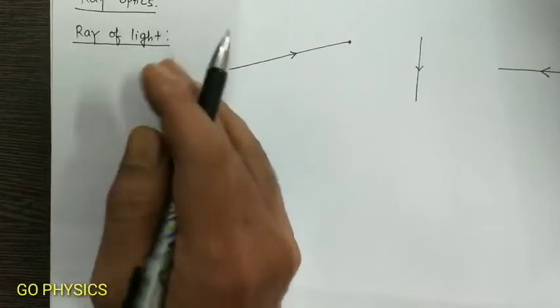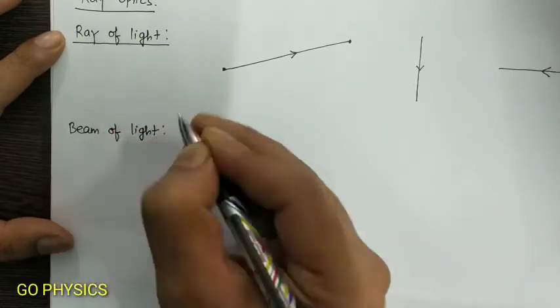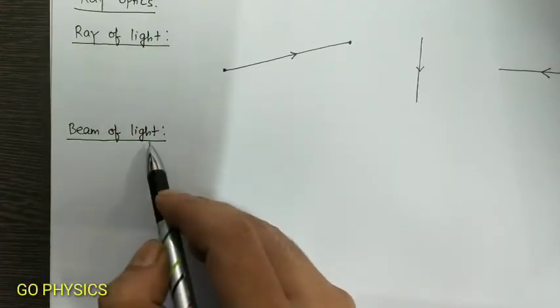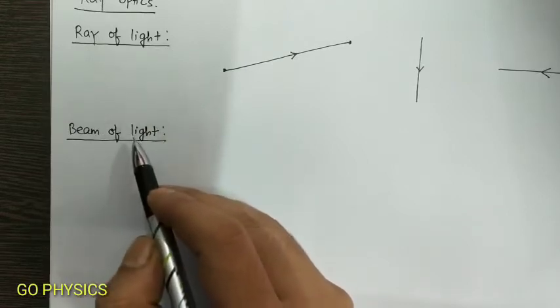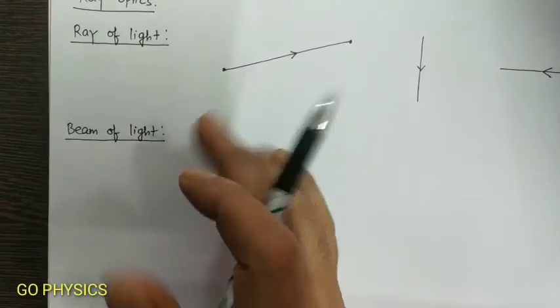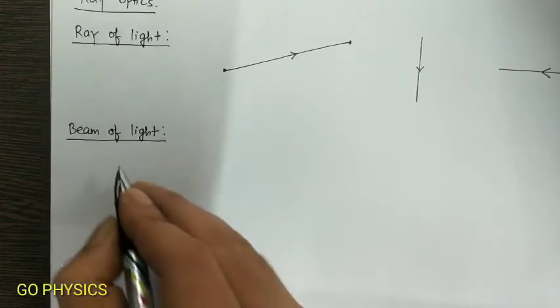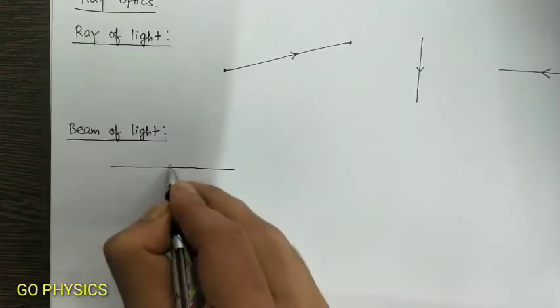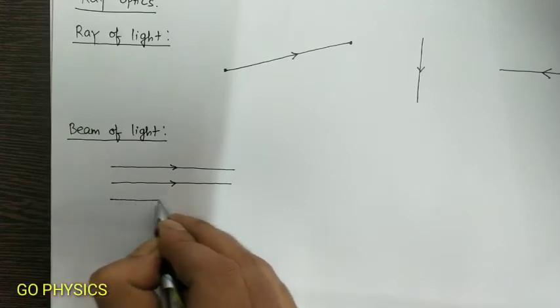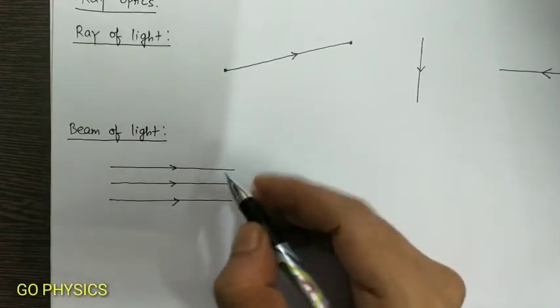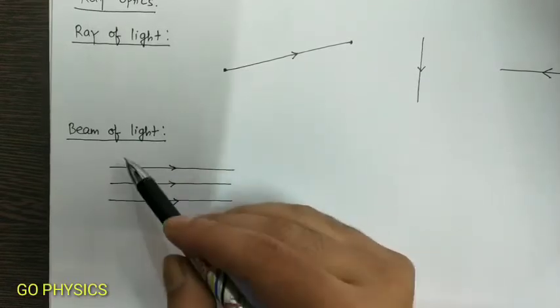Now let's see a new topic called beam of light. Beam of light, sometimes we also call it light beam, is actually a bundle or group of light rays. For example, here I have considered more than one light ray. So this is a bundle of light rays or, in simple words, we will say it's a beam of light.